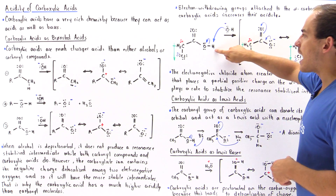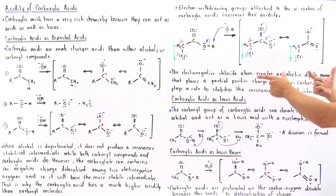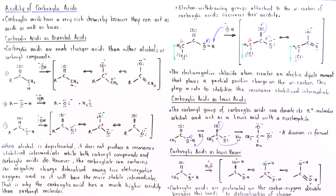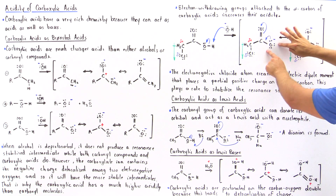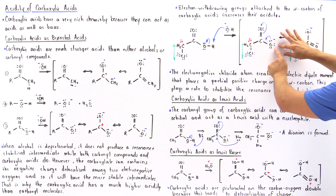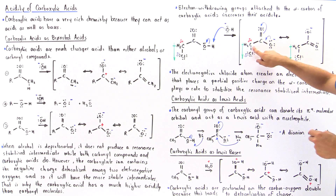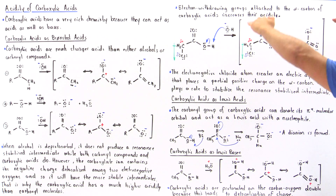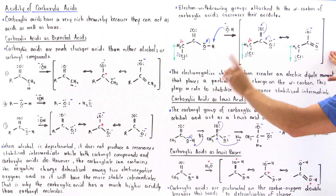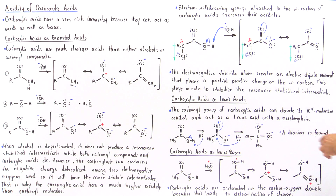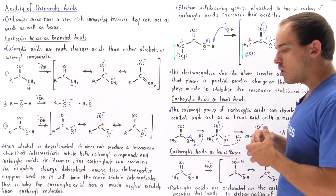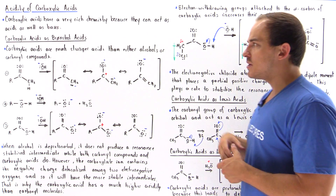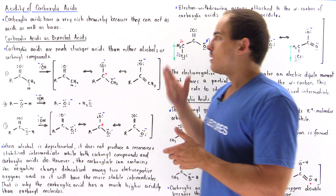When hydroxide deprotonates the H from the hydroxyl group of the carboxylic acid, we form the resonance-stabilized carboxylate ion, with negative charges on both oxygens. Because we have negative charges on these oxygens, the partial positive formed on the alpha carbon by the electronegative chloride is actually a stabilizing effect — it stabilizes the negative charges on the oxygens, lowering the energy of this intermediate. It is thermodynamically more stable than if the chloride were a simple H atom. So by adding electron-withdrawing groups to the alpha carbon, we increase the acidity and lower the pKa of carboxylic acids.